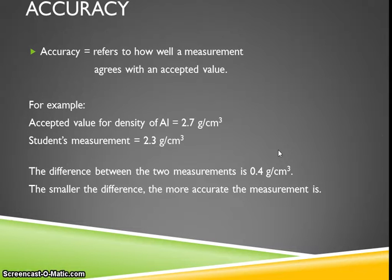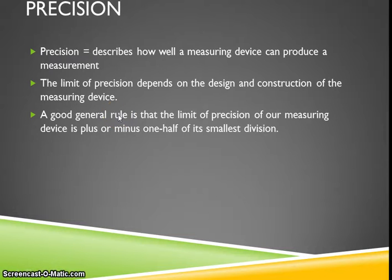Accuracy refers to how well a measurement agrees with an accepted value. Precision, on the other hand, describes how well a measuring device can produce a measurement. Every measuring device has a limit on its precision, and that depends on how that device was designed and constructed.